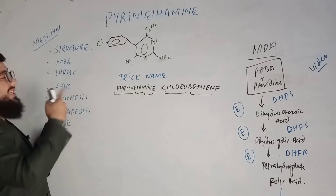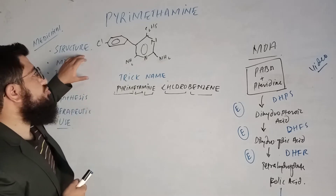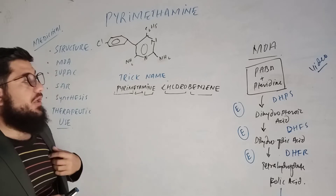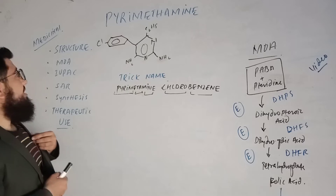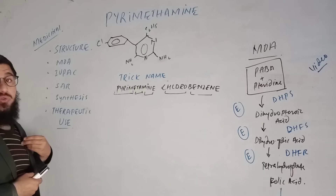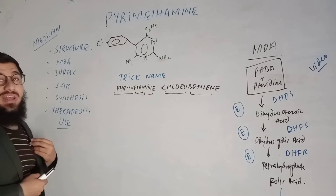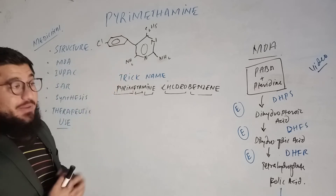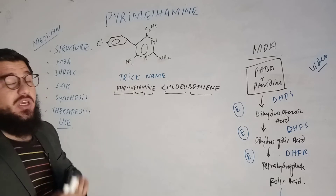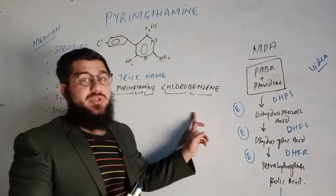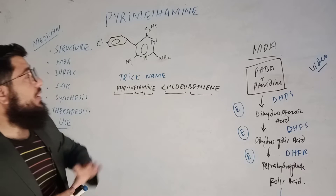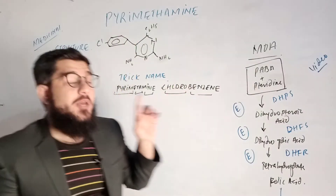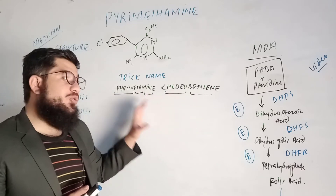We'll be discussing all these points. Pyrimethamine is an antimalarial drug — we use it to treat malaria. Now, coming to the structure: I'm going to give you a trick name that makes drawing the structure super easy. From now onwards, you will call this drug 'paramethamine chlorobenzene' — that is the trick name through which you'll be able to draw the structure.